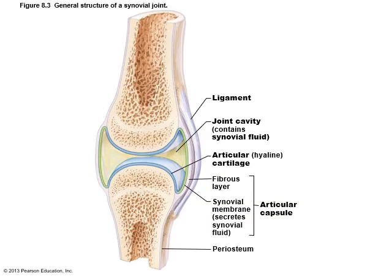This is the synovial joint — the most complex of the joints. These joints are separated by a fluid-containing joint cavity. They are all freely movable diarthritic joints, and the examples are all your limb joints. Most joints of the body fall into this category.